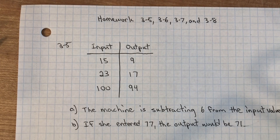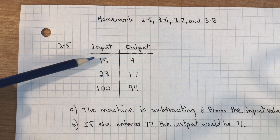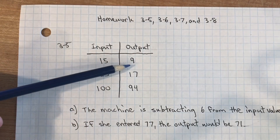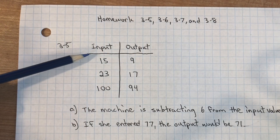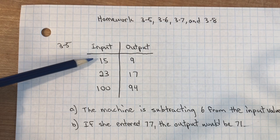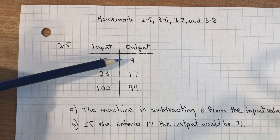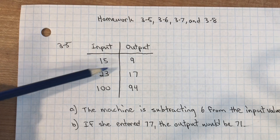You're inputting a number into the machine and getting an output. If you input 15, you get 9. The rule for the machine is: input 15, subtract 6, and you get 9.